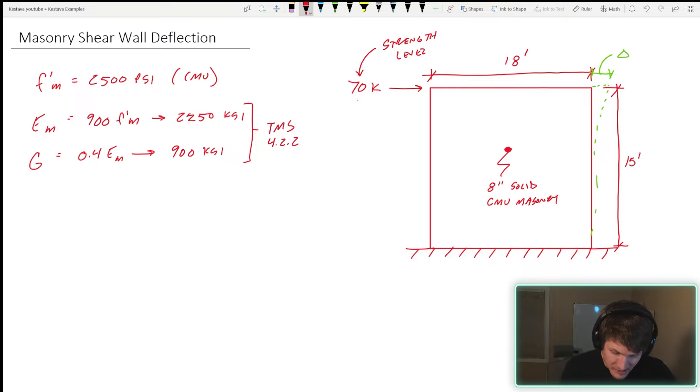We need our modulus of elasticity of our masonry brick, denoted with an equation of 900 f prime m. This equation depends on the type of block that we are using. For CMU it's 900 f prime m, just a function of your block compressive strength. Plug that in and convert to KSI, that gets us 2250.